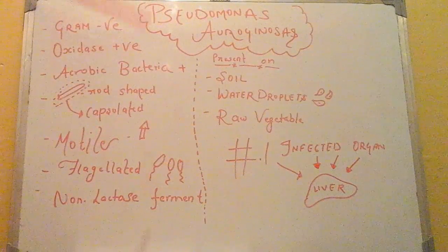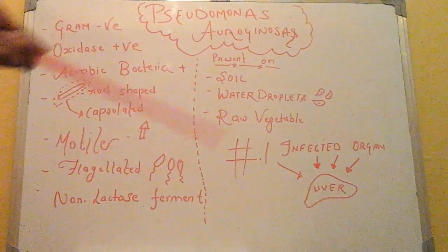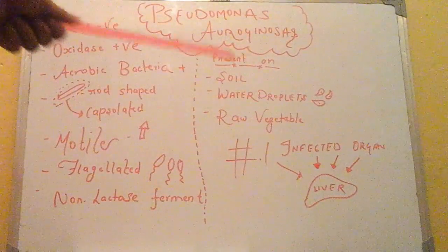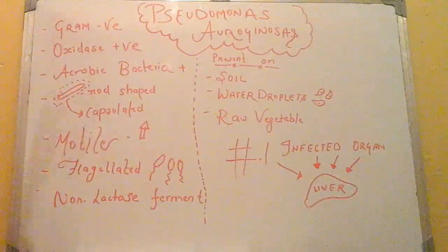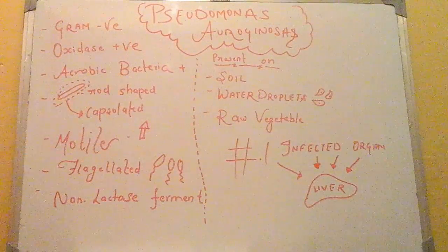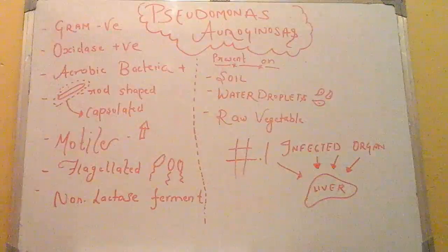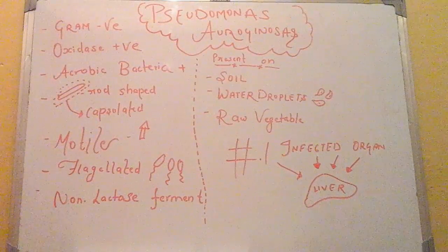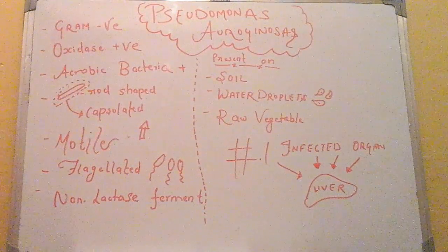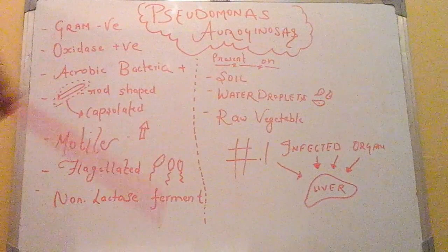It is responsible for ADP ribosylation for elongation factor. This is a very long process which we are going to talk about in part two of this video. Apart from this, the infections it causes include pneumonia, septic shock, UTI, GI infections, and skin and tissue infections.